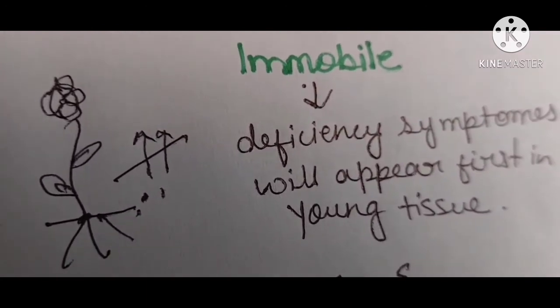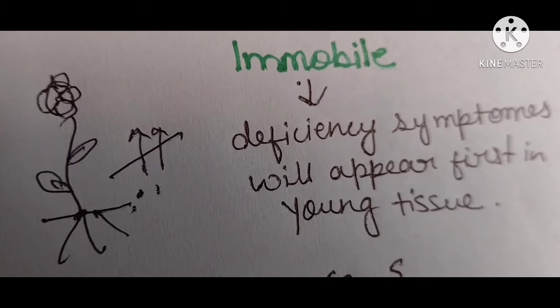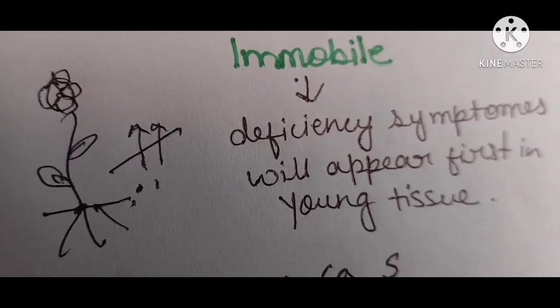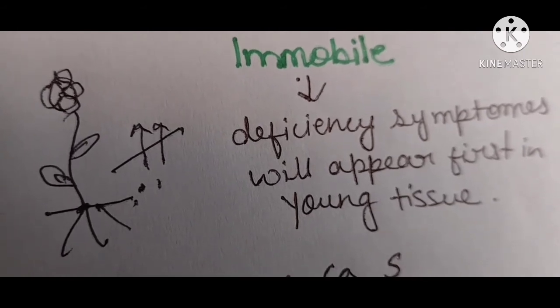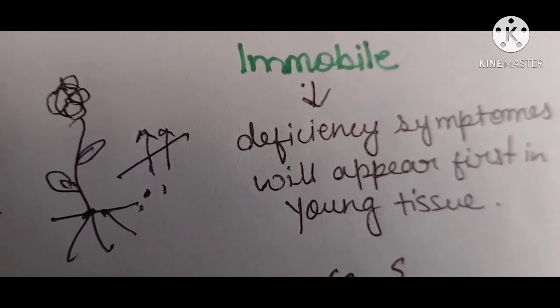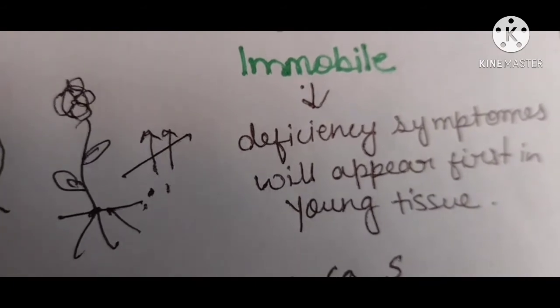If the element is immobile, it will not be moved. So the new tissues formed there will not receive the element because it is immobile, and those new tissues will be deficient.